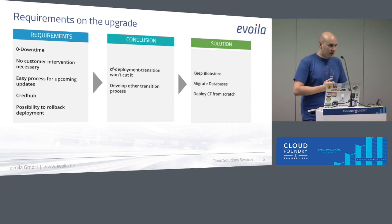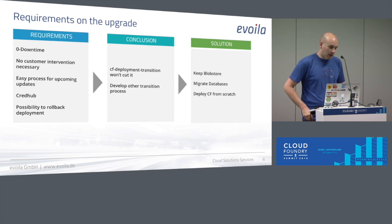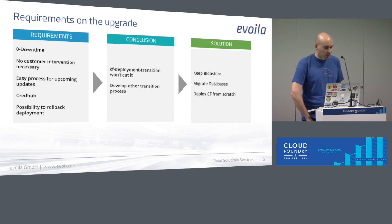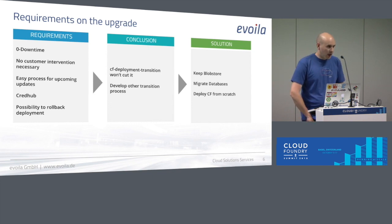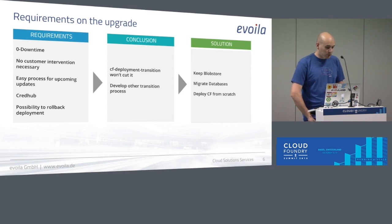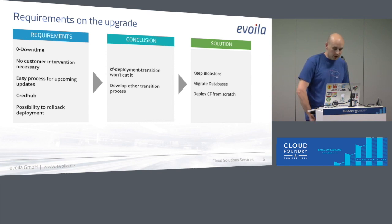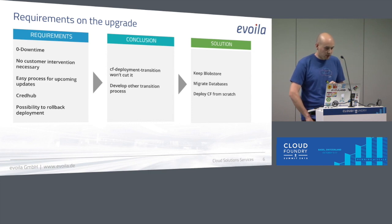The customer had some requirements during the update. There must be zero downtime for all apps, and the customer should not need to intervene in any case — no CF scale, no CF push of the apps. They don't should have to switch their services. They also wanted to transition to CredHub, which they didn't have at the time, and they wanted a possibility to roll back the upgrade if it fails. During the time, the CF deployment transition repo was not that good, so it wouldn't check all the requirements for us.